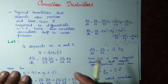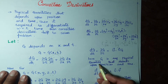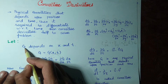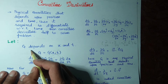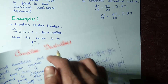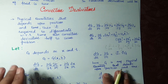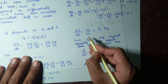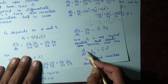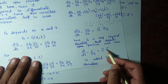Since g was an arbitrary physical quantity depending on position and time, we can now write the general result. Removing g, the convective derivative operator is: d/dt = ∂/∂t + u·∇. This is the convective derivative formula.